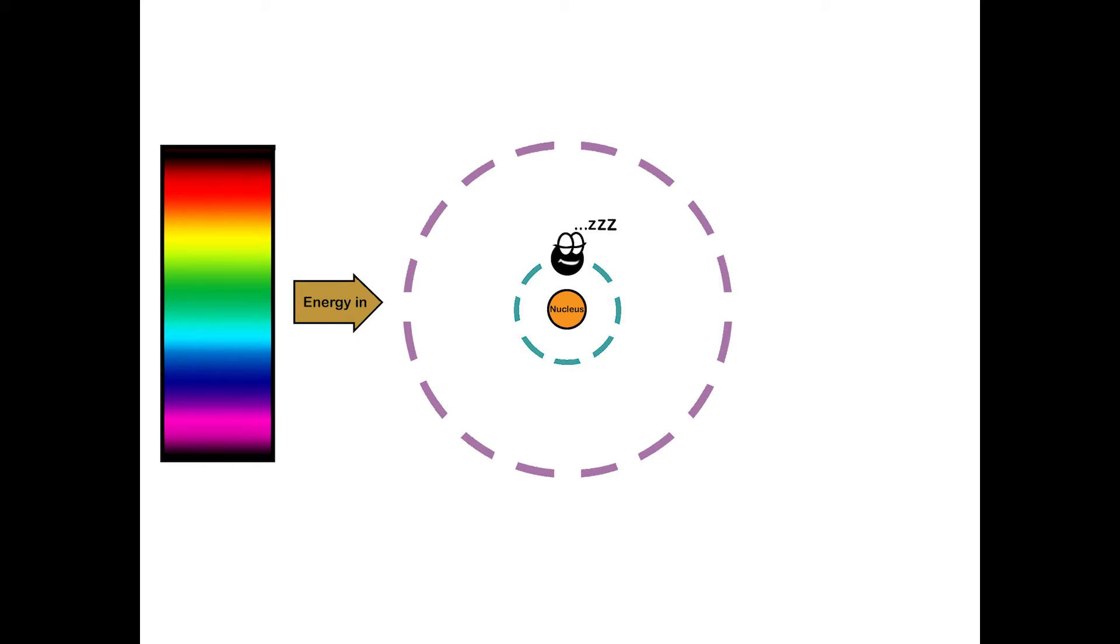One way to give that electron some energy is to shine some light past it. That allows the electron to absorb the energy it needs to jump up to a higher orbital. Now one thing that's interesting is that the energy difference between those two orbitals is a very specific value. The electron needs exactly that much energy to make the jump. If you don't give it enough, the electron doesn't jump up to the higher orbital. If you give it too much, it'll absorb only the energy it needs, and it doesn't absorb any more.